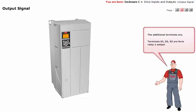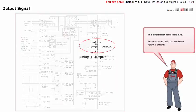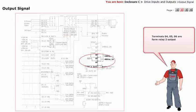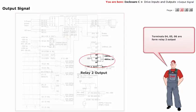The additional terminals are terminal 01, 02, 03 are form relay 1 output. Terminal 04, 05, 06 are form relay 2 output.